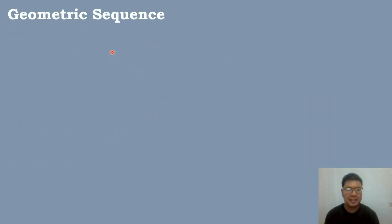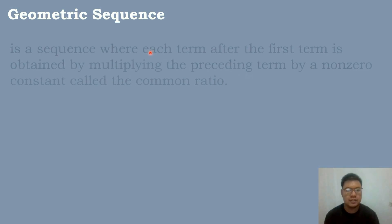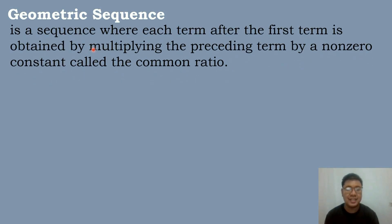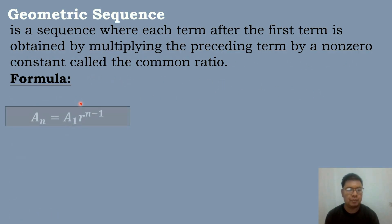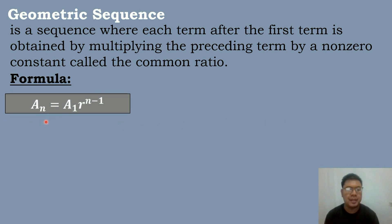Before we start our lesson, let us define first what is a geometric sequence. A geometric sequence is a sequence where each term after the first term is obtained by multiplying the preceding term by a non-zero constant called the common ratio. We have the formula for the geometric sequence: a sub n is equal